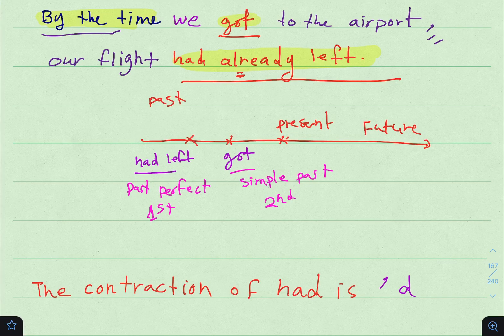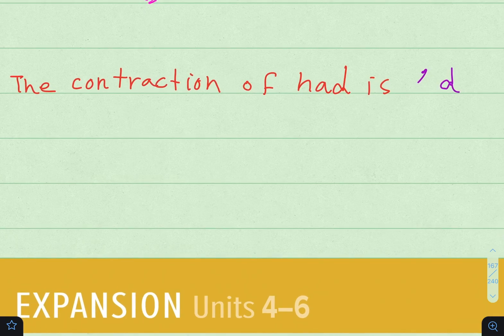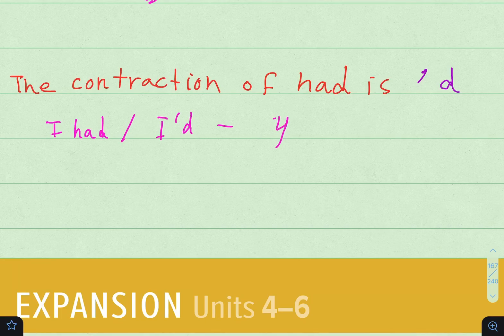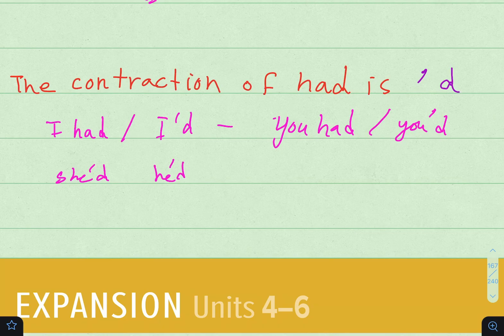One more thing: the contraction of 'had' is apostrophe 'd'. For example, 'I had' becomes 'I'd', 'you had' becomes 'you'd', and also 'she'd', 'he'd', and 'they'd'.